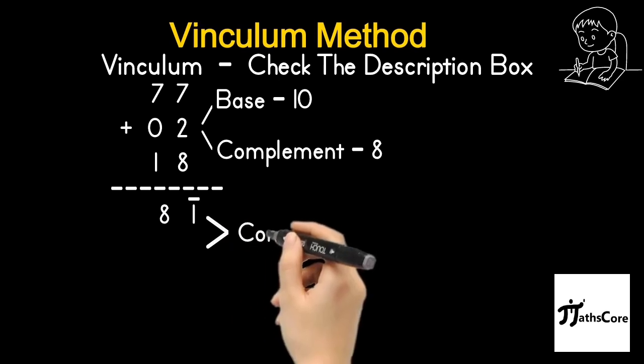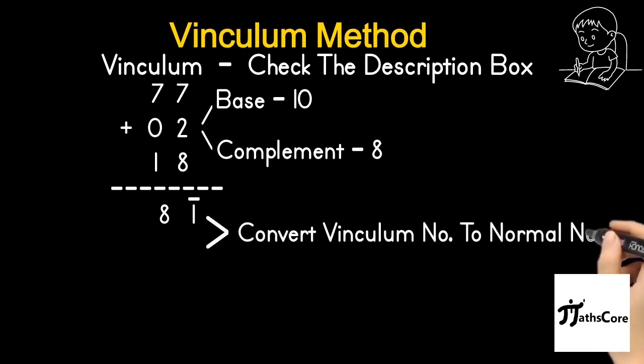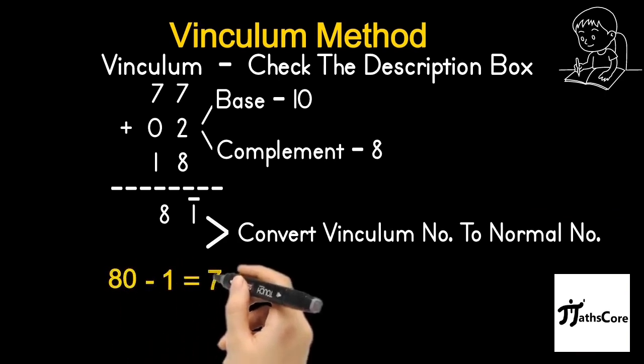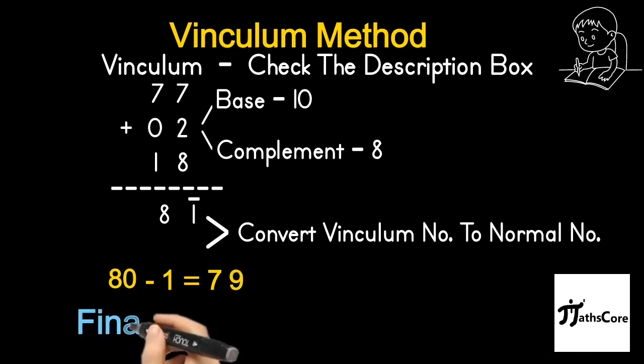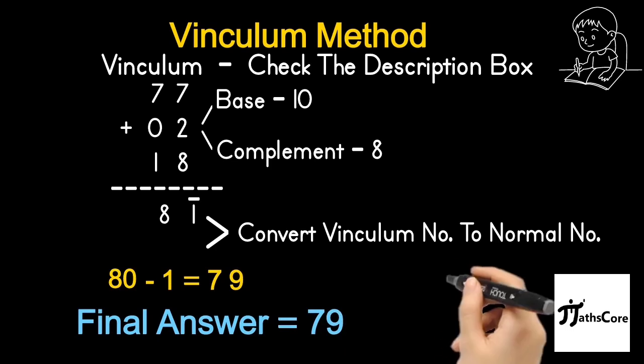Now convert this vinculum number into the form of normal number. You know very well how to convert the vinculum number into the form of normal number. Take the place value of 8, that is 80, and subtract 1 from it. 80 minus 1 is equal to 79. So the final answer is 79.